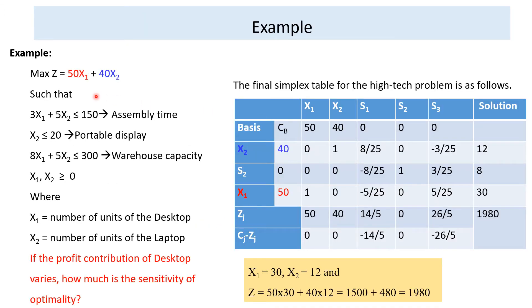Let's do one example. This is a maximization of Z = 50x1 + 40x2, subject to: 3x1 + 5x2 ≤ 150 (assembly time), x2 ≤ 20 (portable display), 8x1 + 5x2 ≤ 300 (warehouse capacity), and non-negativity x1, x2 ≥ 0, where x1 is the number of units of desktop and x2 is the number of units of laptop.